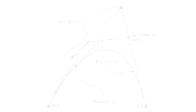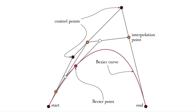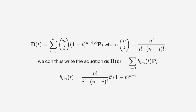Intermediate values of t produce points along the curve between the control points, resulting in the smooth interpolation characteristic of Bezier curves. In essence, t controls the position along the curve and is used to generate points on the curve by interpolating between the control points. To implement the Bezier points using Unity, we will need to simplify the equation. By expanding and simplifying the binomial coefficients, we get what is known as Bernstein basis polynomials of degree n.